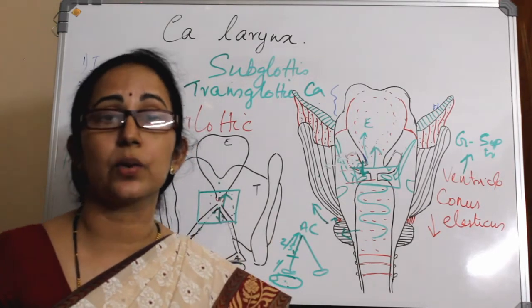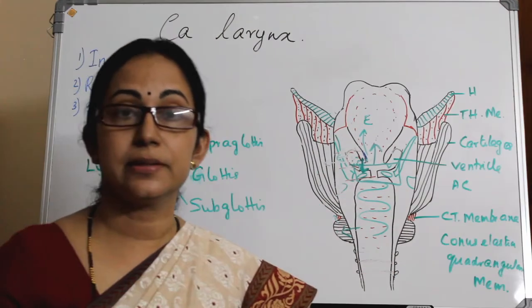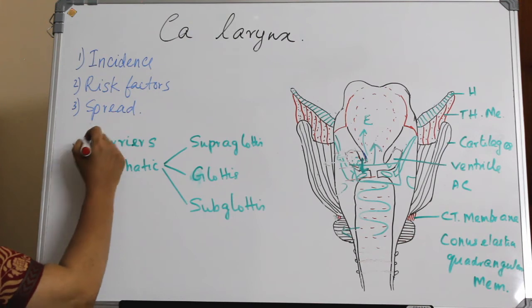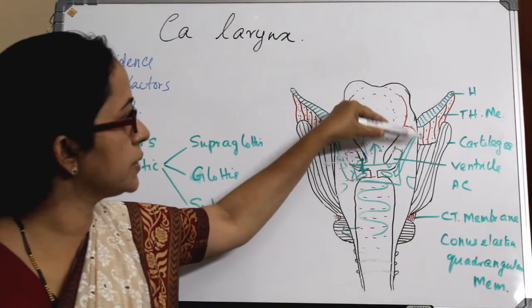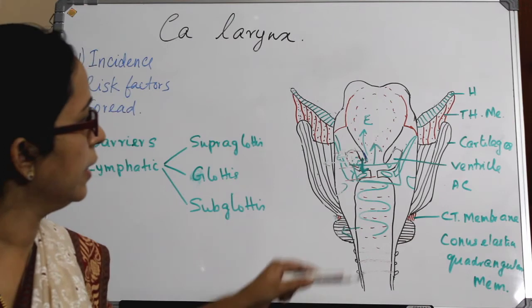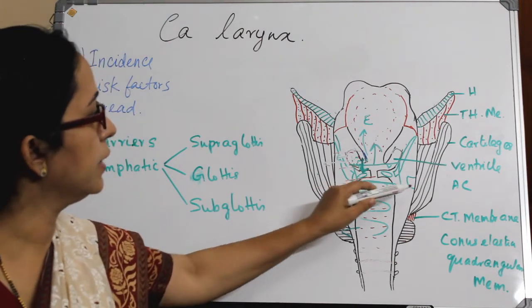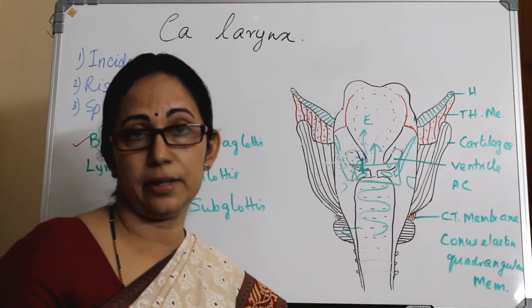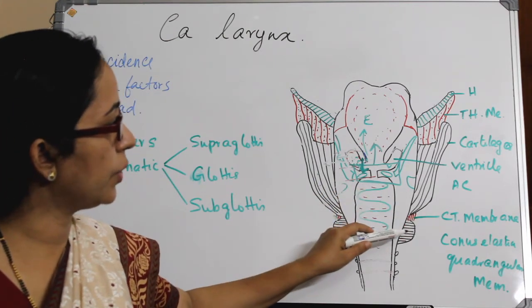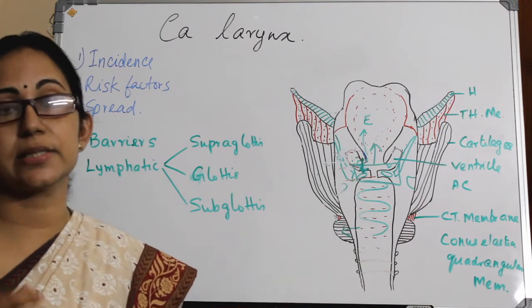We have now covered the spread of laryngeal malignancies in the supraglottis, glottis, and subglottis, and defined transglottic carcinoma. The barriers to local spread — important for MCQs — are: the hyoid bone, the thyrohyoid membrane, all laryngeal cartilages, the ventricle, the anterior commissure or Broyle's tendon in the glottis, the cricothyroid membrane, the conus elasticus, and the quadrangular membrane.